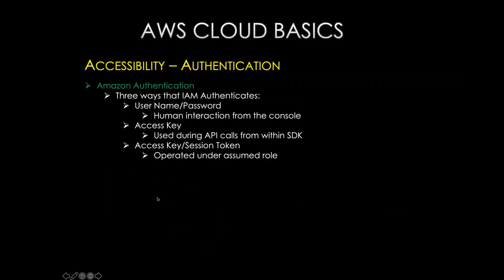Amazon authentication has three ways: username and password — very simple; access keys used during API calls from within an SDK, where Amazon distributes an RSA key (256 AES) when you start an EC2 instance and you embed it in your API calls; and access key session tokens operated under an assumed role — which is what we discussed earlier.